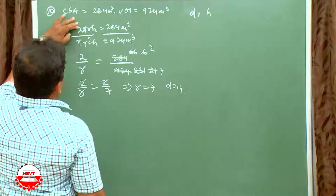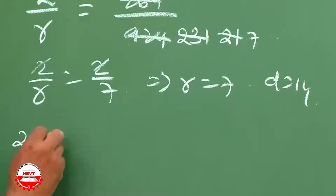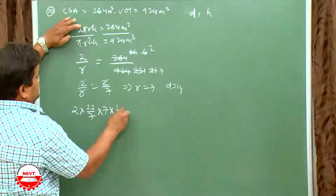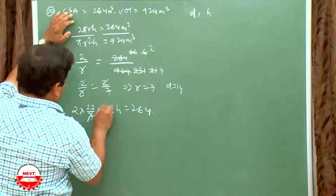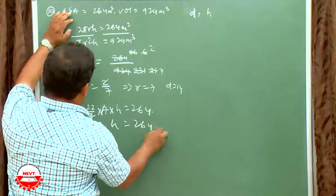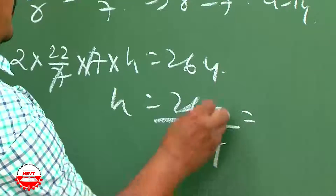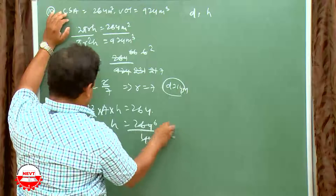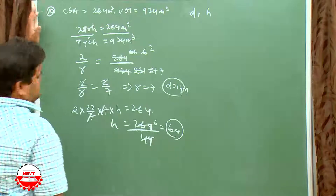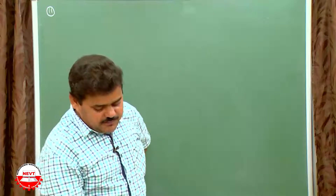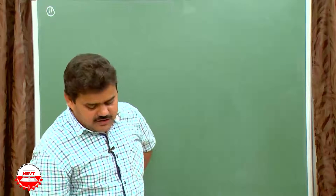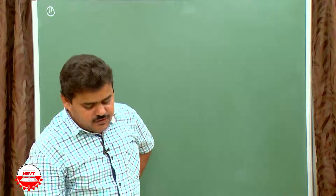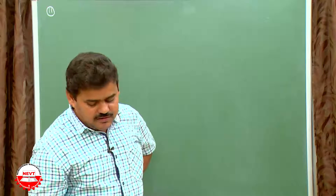So r = 7, meaning diameter = 14 m. To find h, substitute into 2πrh = 264: 2 × (22/7) × 7 × h = 264, giving h = 264/44 = 6 m. So diameter is 14 m and height is 6 m.